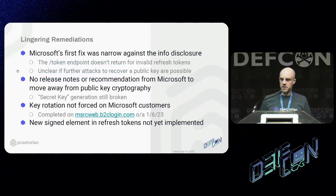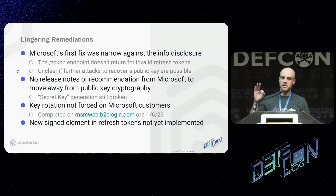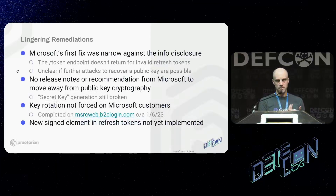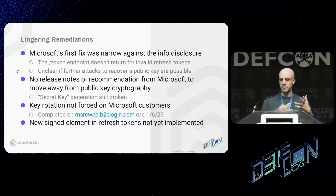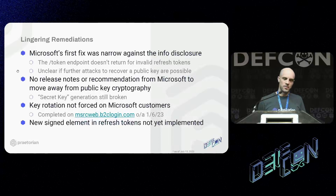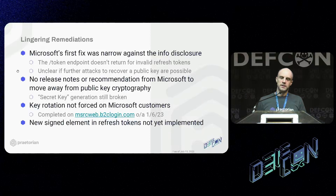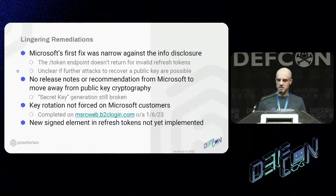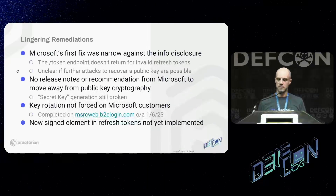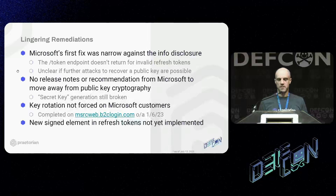There are lingering remediations. The first fix in December was narrow — just cutting off the timing attack itself. It's unclear if there are other artifacts in that session you could use to still recover a key. I was inspired by James Kettle's talk this morning about similar tools, so it may be possible to get around this mitigation — but I haven't found any way. I also think they are going to encourage users to use secret key generation instead of RSA key generation. The new signing element in the refresh tokens isn't quite implemented yet, but I think they're still working toward that.